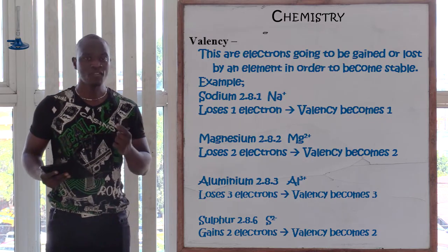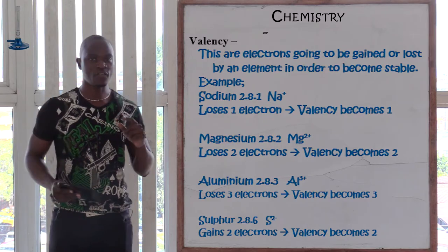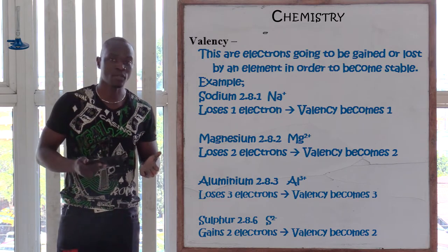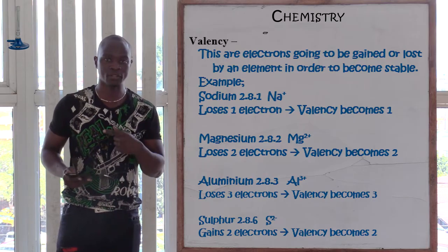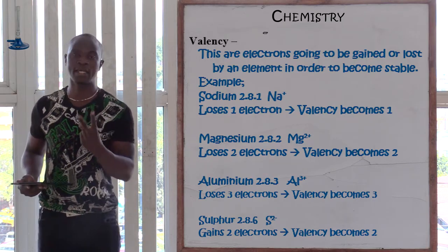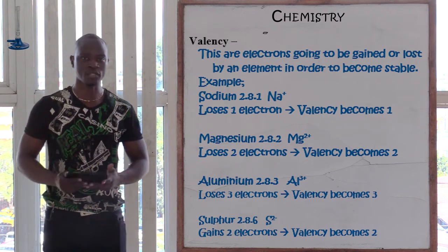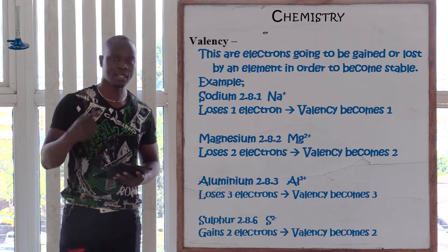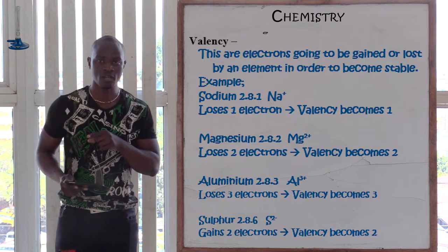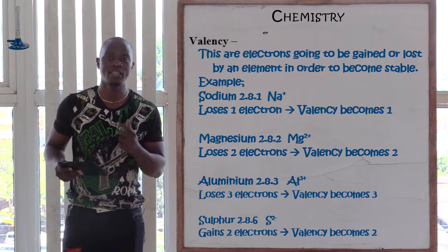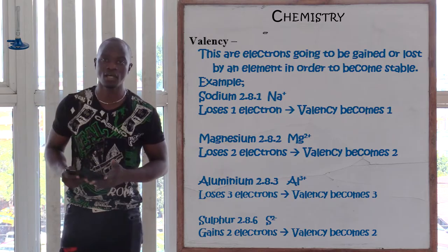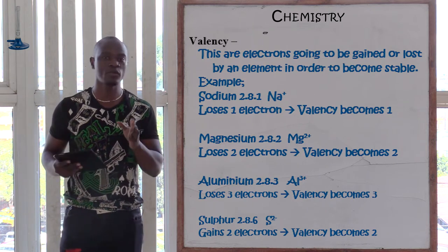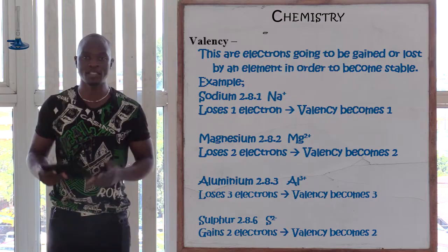Let's take for example sulfur. Sulfur is atomic number 16, so the electronic configuration of sulfur is 2,8,6. Sulfur is a non-metal, therefore sulfur is not going to lose electrons but is going to gain electrons, because it is easier for sulfur to gain two electrons than to lose six. Since it requires very low energy in gaining electrons, sulfur will gain electrons, therefore the charge of sulfur is going to be negative. All non-metals have a charge of negative, representing that they gain electrons.